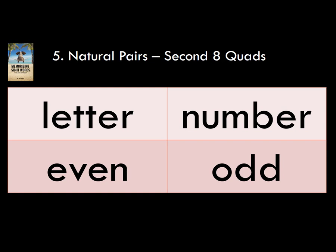Letters don't have even and odd, but numbers do. So by saying letter, number, even, odd, it's easier to remember them as a group. Letter is the opposite of number, sort of, and then even is the opposite of odd. So: letter, number, even, odd.